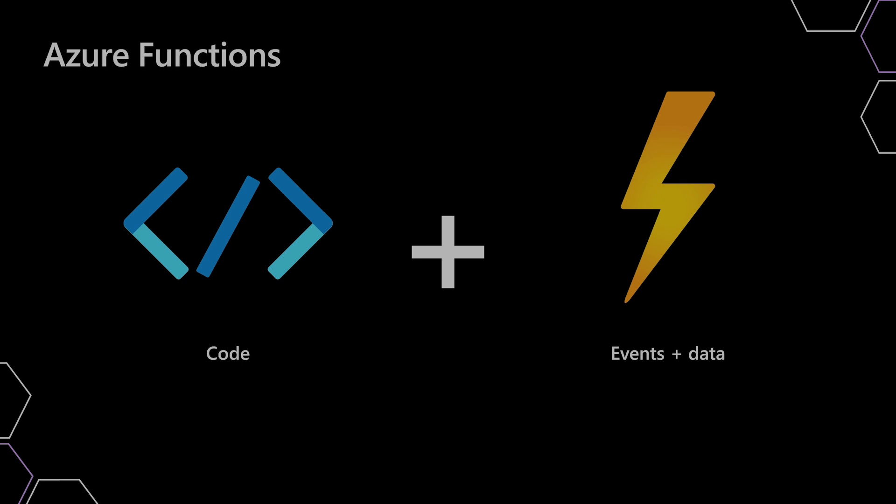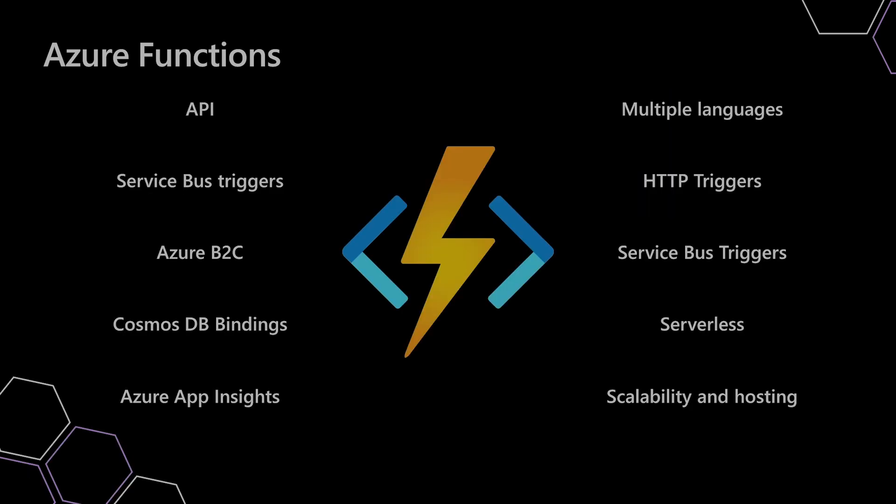Azure Functions, if anyone's not aware, are just ways of bringing our fairly small, succinct pieces of code and sitting them with our different business events and our data — just to have our triggers there and to piece those things together. We're mostly going to be talking about Azure Functions triggered by an HTTP request in this talk, somewhat akin to an API.